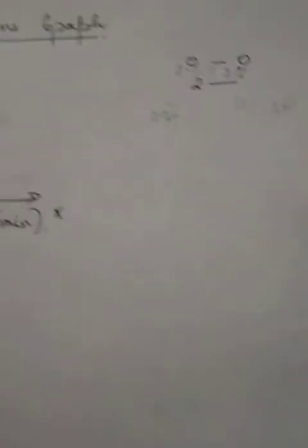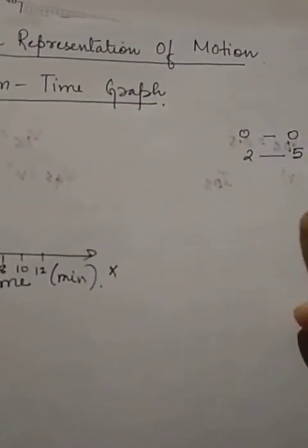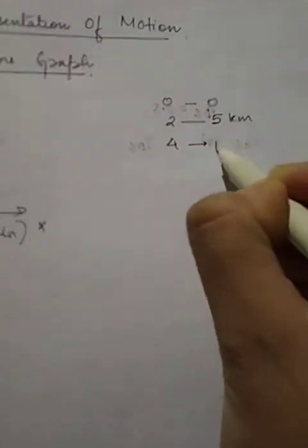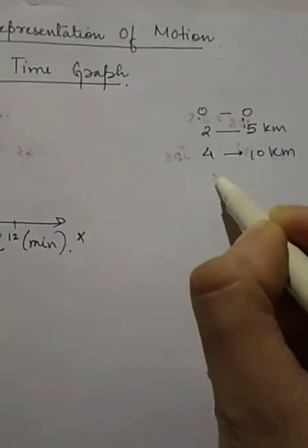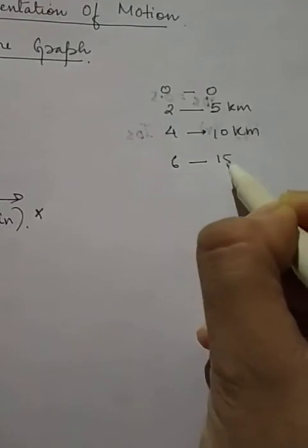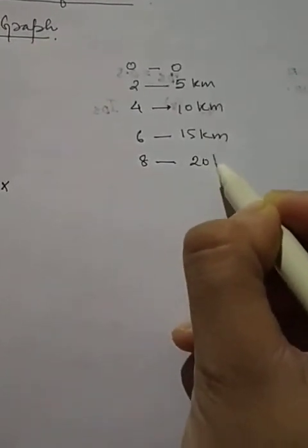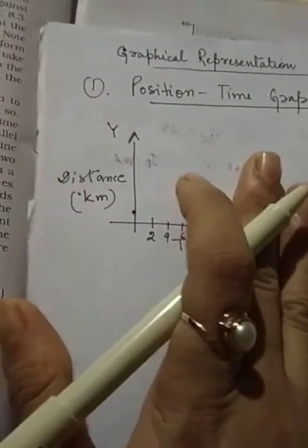If you look at the distance, suppose 0 to 0 distance, then suppose 5 km, 4 minutes you go to 10 km, 6 minutes you go to 15 km, 8 minutes you go to 20 km.